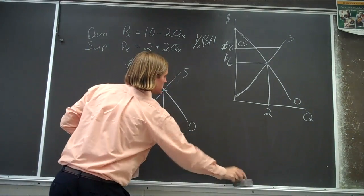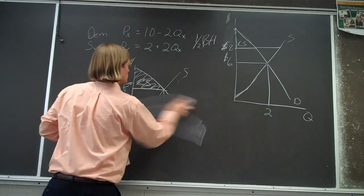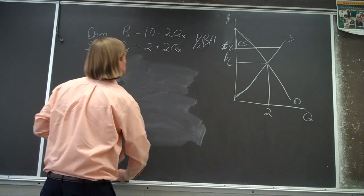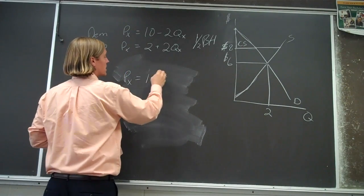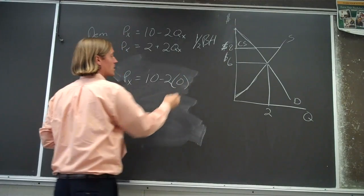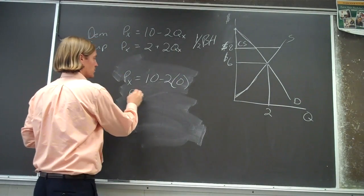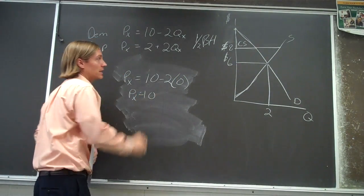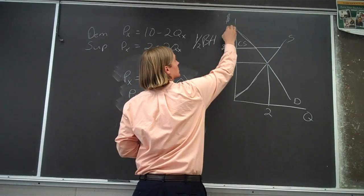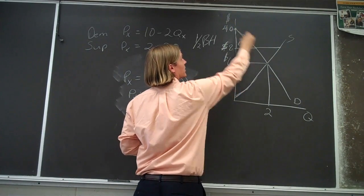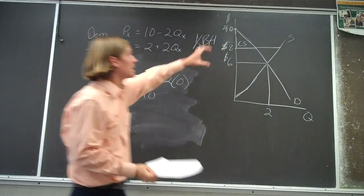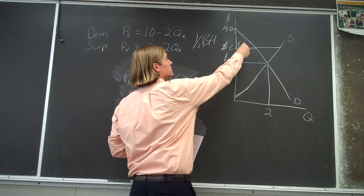Then we've got, let me erase this. So we've got the price of x is equal to 10 minus 2 times the quantity of zero, while the price of x is 10. And so this intersection of the demand curve is 10. So we've got the height of this triangle. So this is going to be 2.